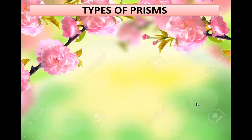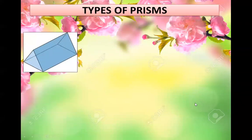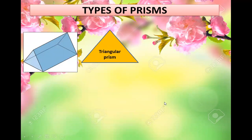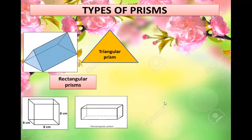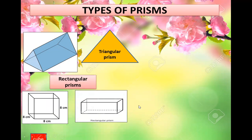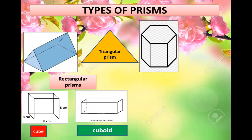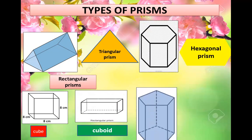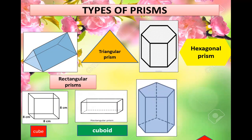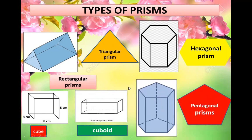Types of prisms. The first type is triangular prism. Rectangular prism — that is cube and cuboid — are rectangular prisms. Then hexagonal prisms and pentagonal prisms.